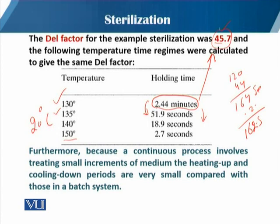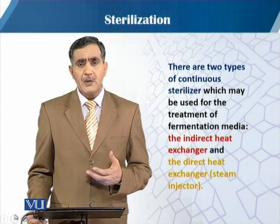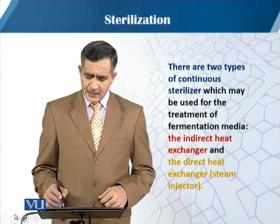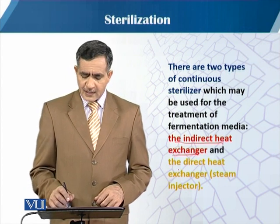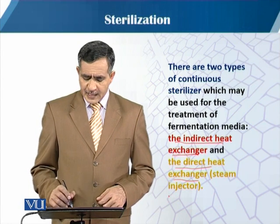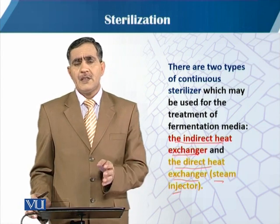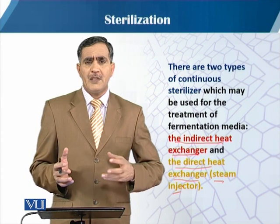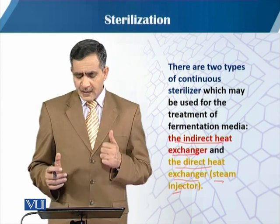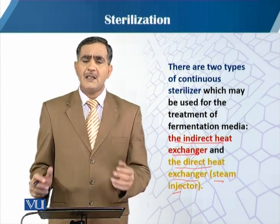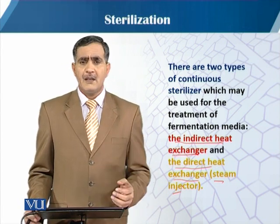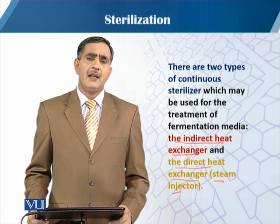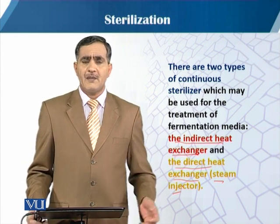In continuous sterilization of the medium, there are two types of heat exchangers that may be used for treatment of the fermentation medium: the indirect heat exchanger, in which there is no contact of the heating agent (mostly steam) with the medium; and the direct heat exchanger, called a steam injector, in which steam contacts the medium directly. Both methods have their advantages and disadvantages, which will be discussed in a later module.